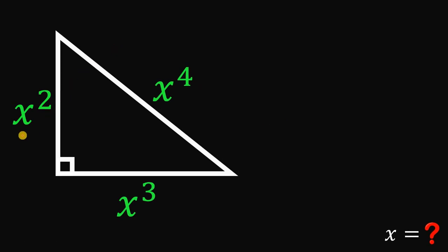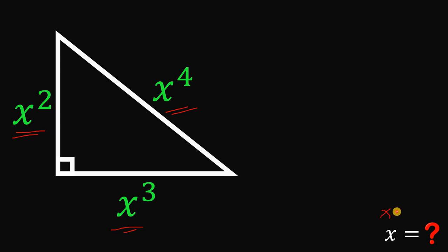Given this right triangle with side lengths x squared, x cubed, and x raised to the fourth power, our goal is to solve for the real value of x. So x must be a real number.